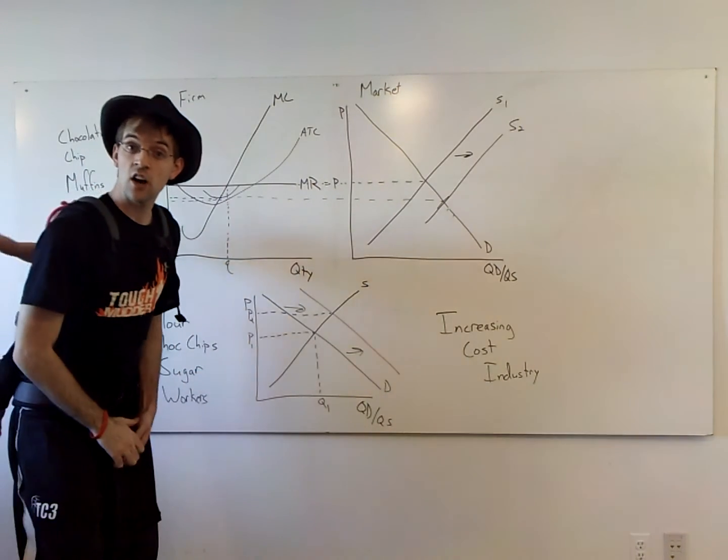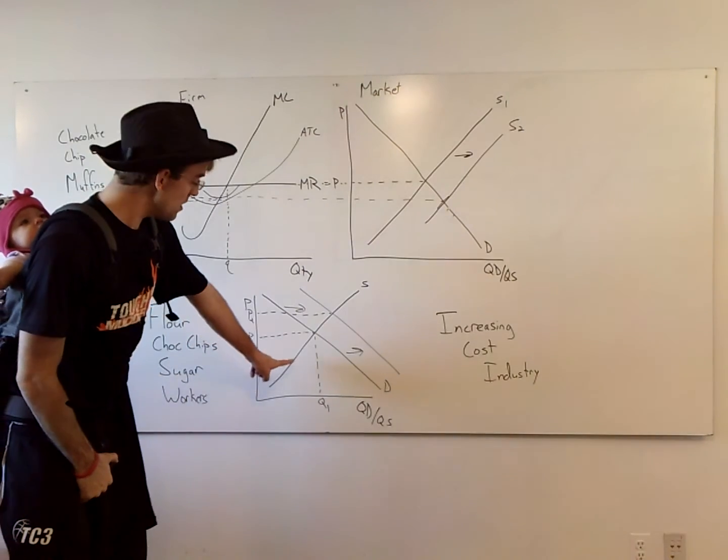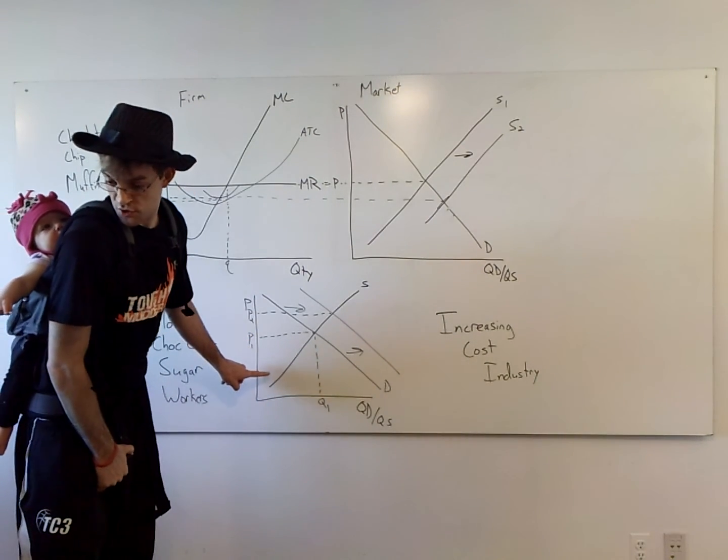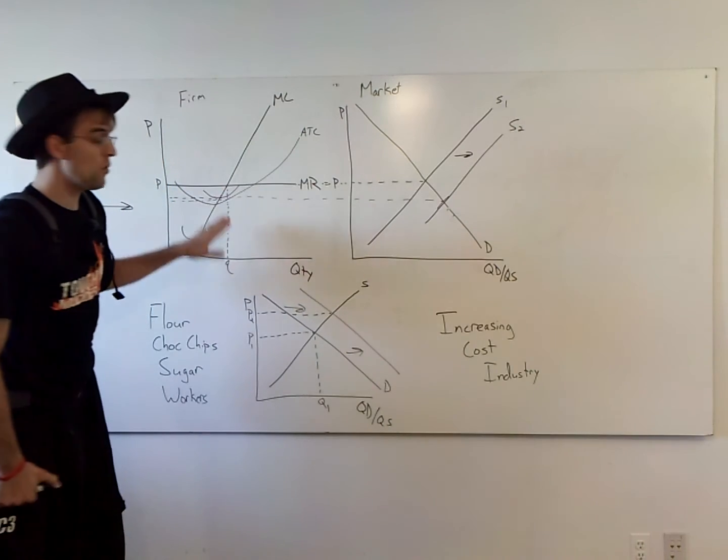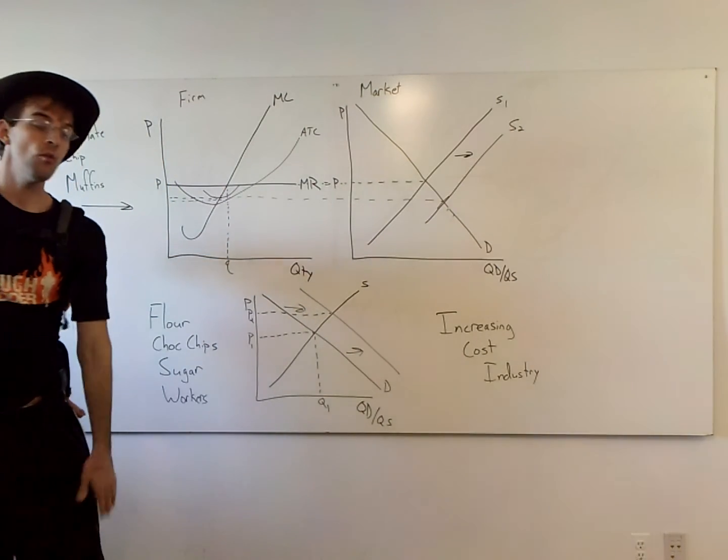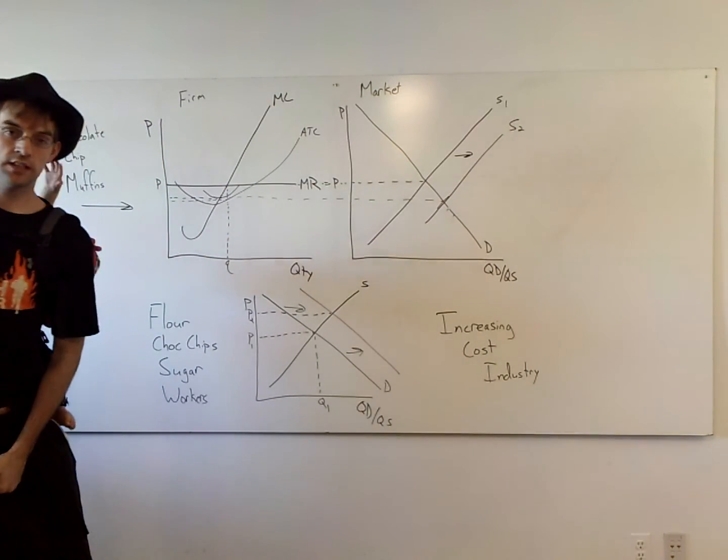So this is a little help to get you to understand the idea of an increasing cost industry. Notice if it's a constant cost industry, what will happen here, Brooke Addison? Nothing. So your ATC curve won't move at all. Hopefully, this helps you a little bit with this idea.